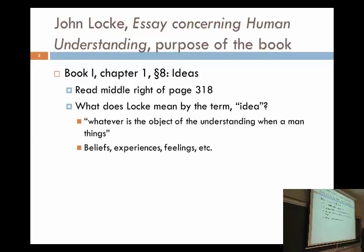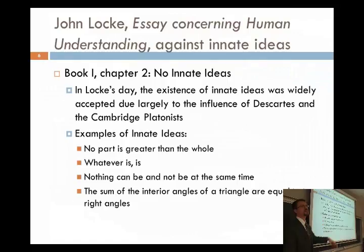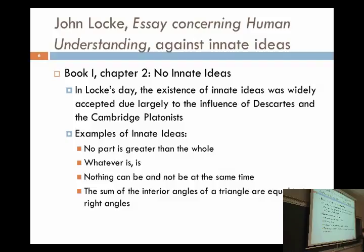What we're going to move on to now is chapter two. Chapter one is just kind of the setup for the book, letting us know what he's aiming to do and that the scope of human knowledge is not unbounded but has limits. In the second chapter, what we're going to be trying to do is show that there are no innate ideas. In Locke's day, the existence of innate ideas was widely accepted, due largely to the influence of Descartes and the Cambridge Platonists.